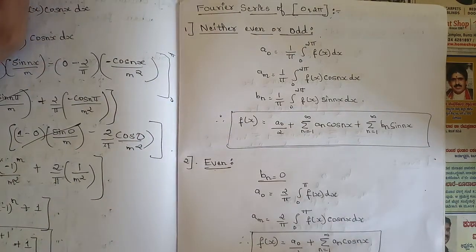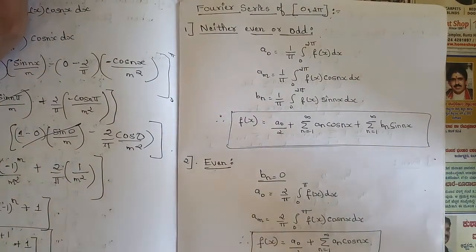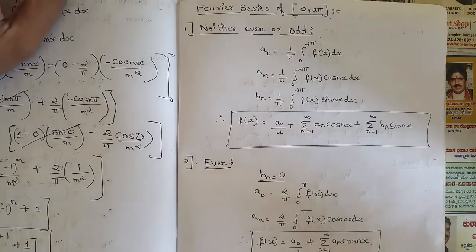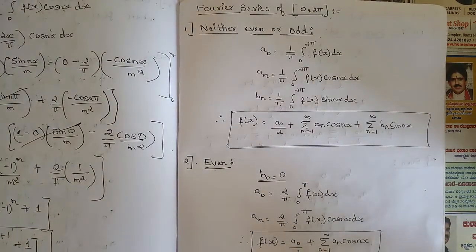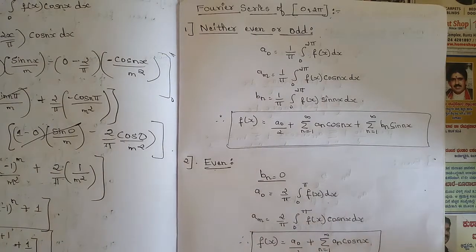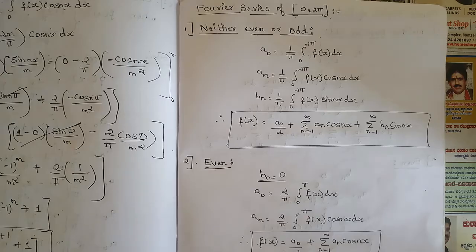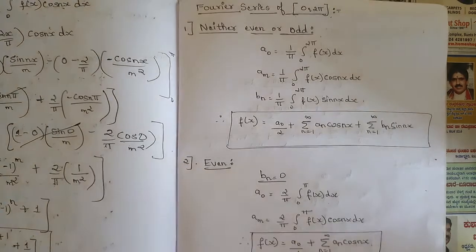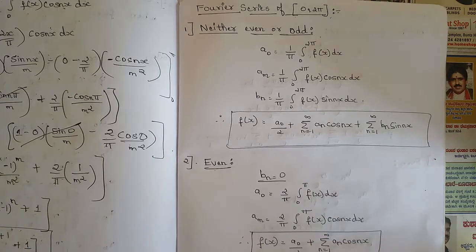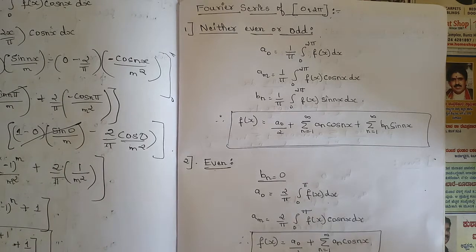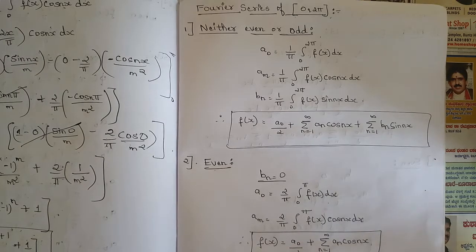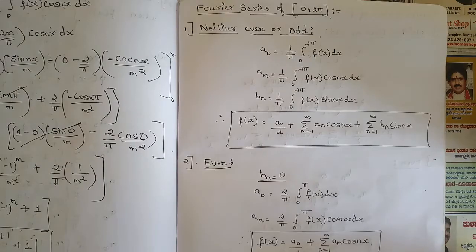Hello everyone. Today we are discussing more intervals related to Fourier series. Till now we have discussed the intervals from minus pi to pi — all the conditions, Bernoulli's rule, and all the Fourier coefficients for three cases: neither even nor odd, even, and odd. Today we will discuss all the formulas and Fourier coefficient formulas for all the intervals. The intervals we are studying today are zero to two pi, minus l to l, and zero to two l.